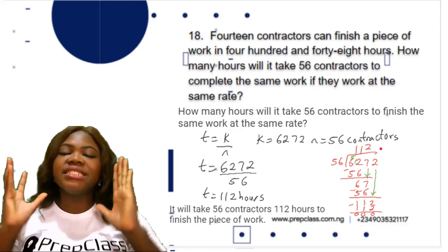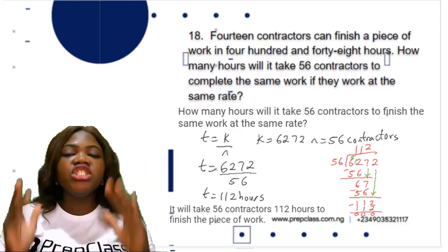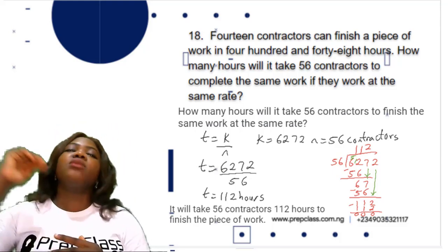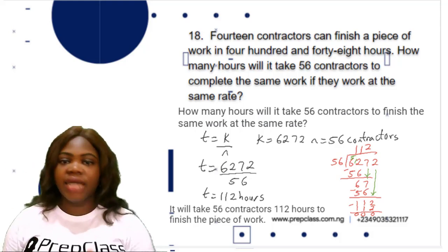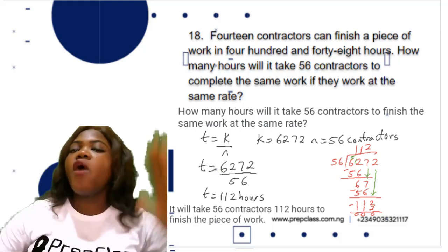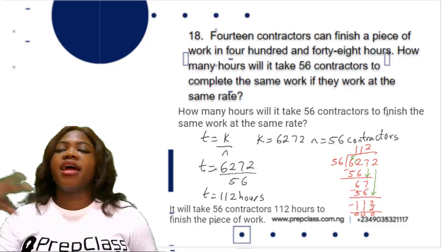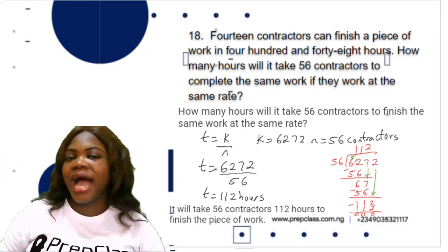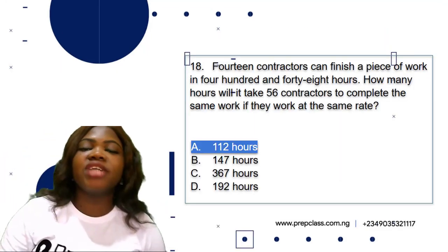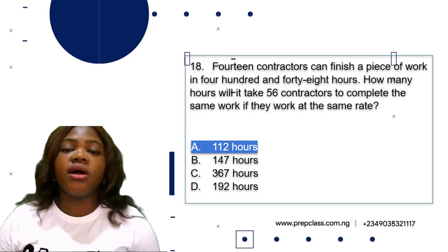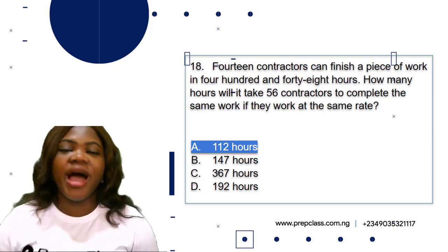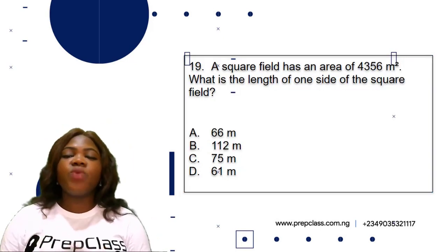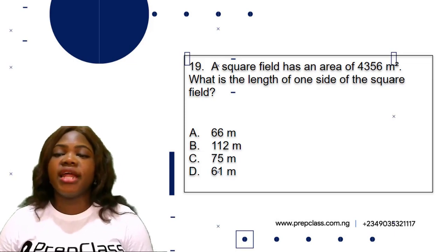So it will take 56 contractors 112 hours to finish the same piece of work at the same rate. Notice that 14 contractors took 448 hours, but 56 contractors only take 112 hours — the more contractors, the less time. The correct option is option A: 112 hours. Now question 19: a square field has an area of 4,356 square meters. What is the length of one side?